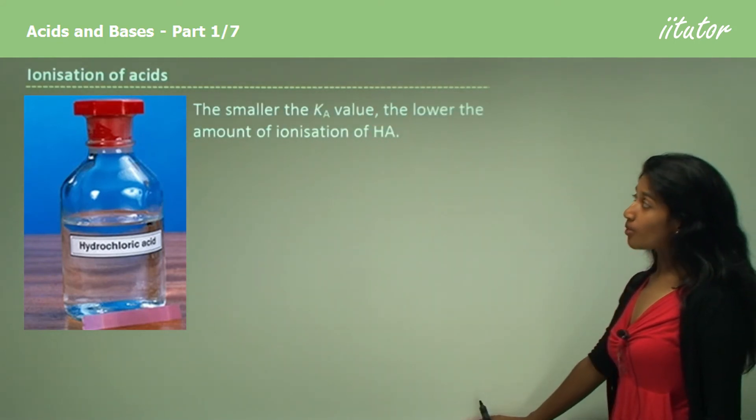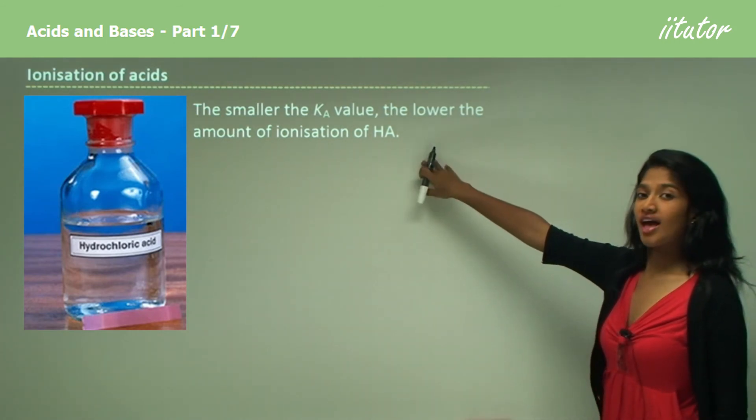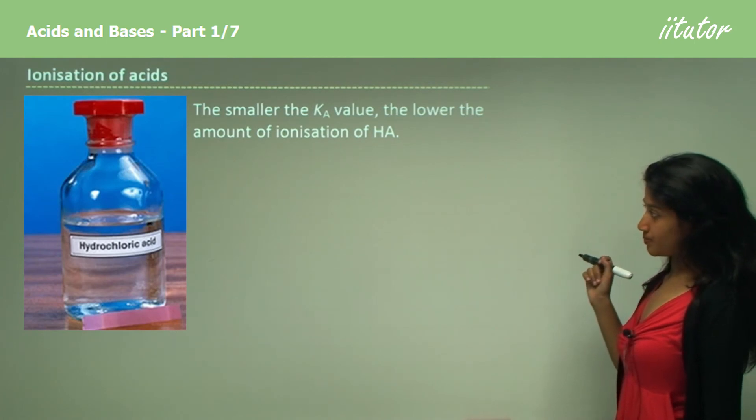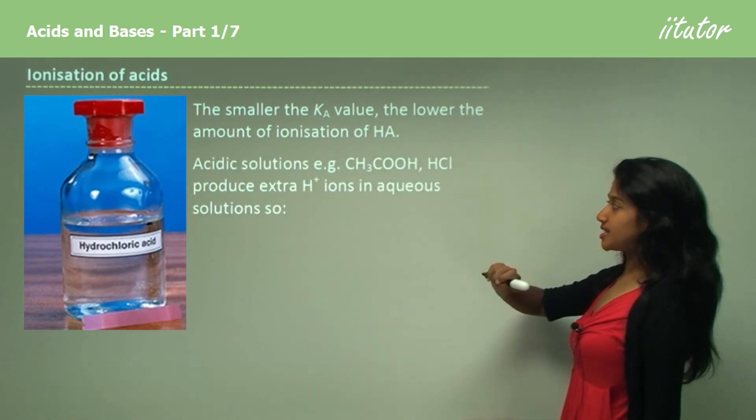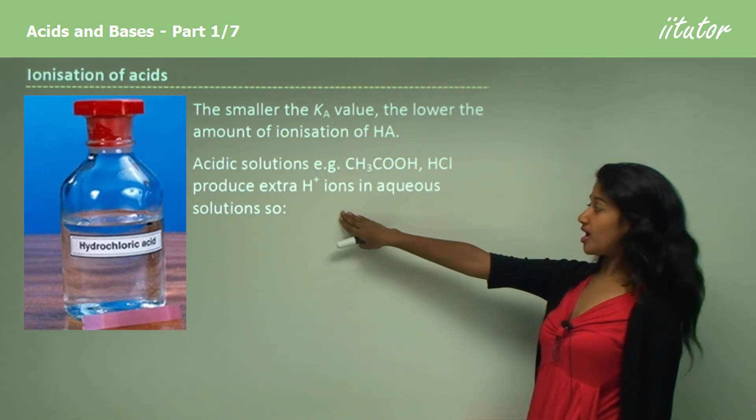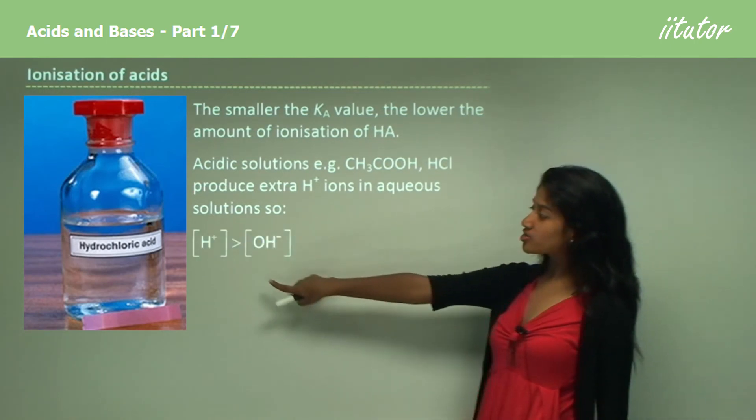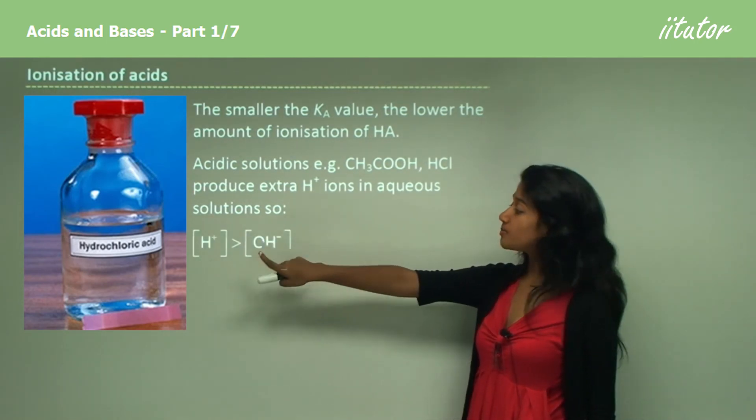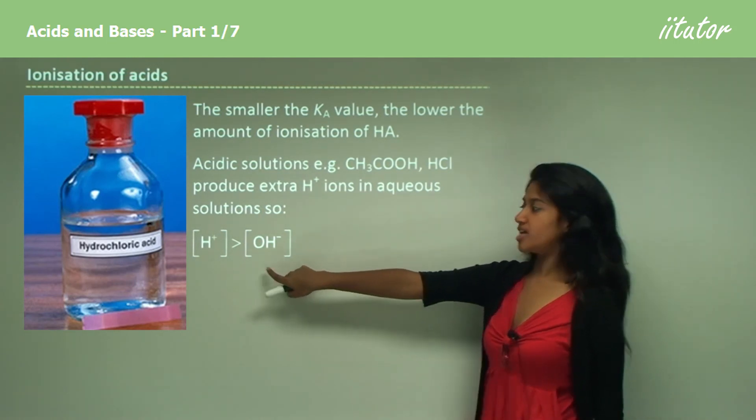The smaller the Ka value, the lower the amount of ionization of HA, which is the acid we took as an example. Acidic solutions such as acetic acid and hydrochloric acid produce more hydrogen ions in aqueous solution. Their hydrogen ion concentration is greater than the hydroxide ion concentration, as you can see here.